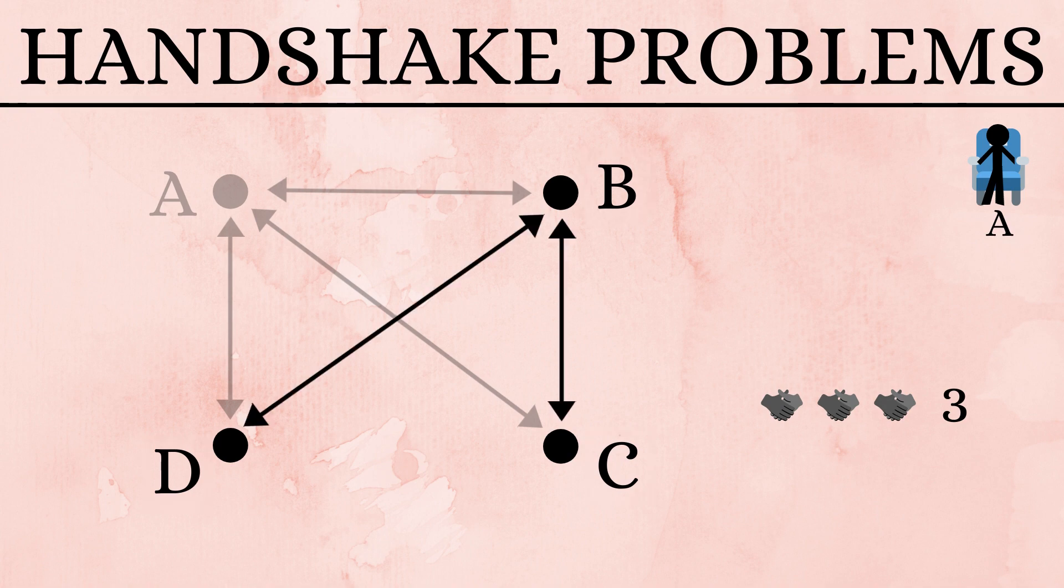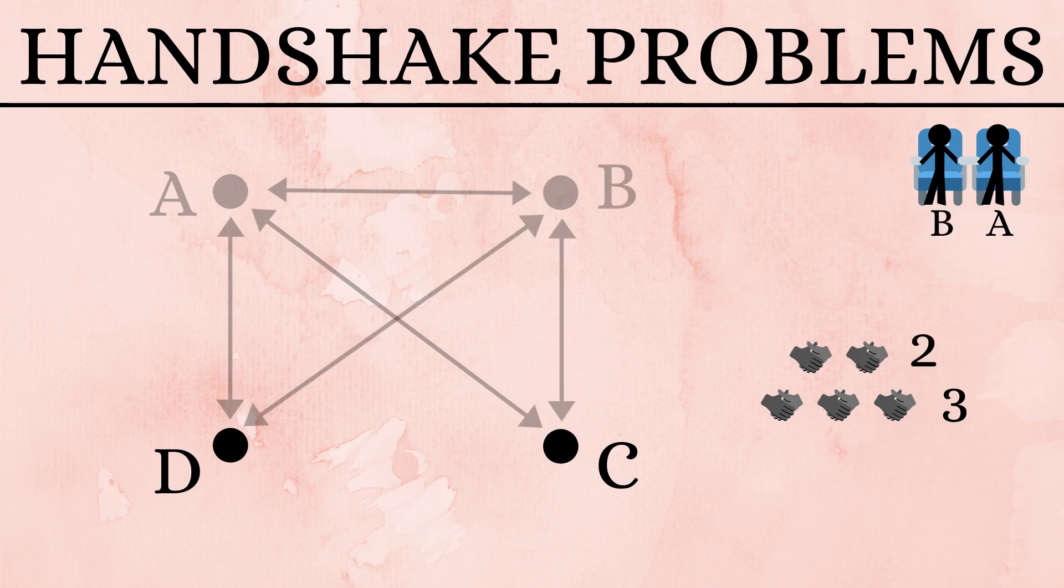Next, B would shake hands with C and D, and then he too goes and sits down. Two more handshakes done and two people remaining.